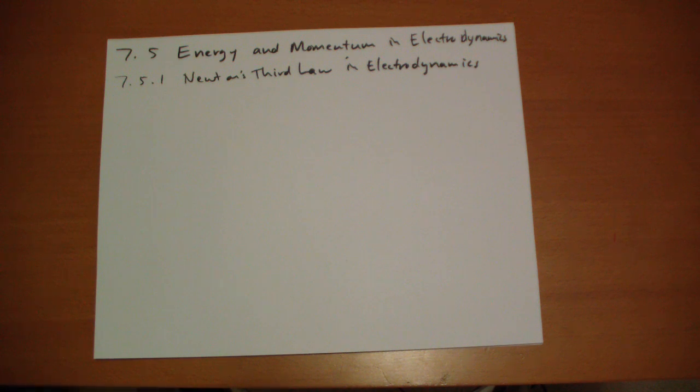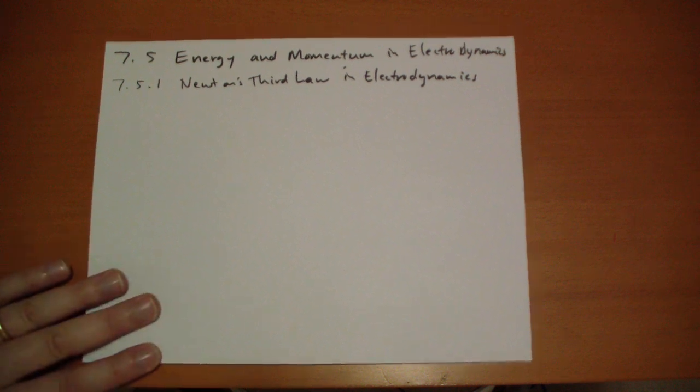If we break Newton's third law, if these equations that Maxwell gave us give us a force on A by B and on B by A that isn't equal and opposite, if this is the case...